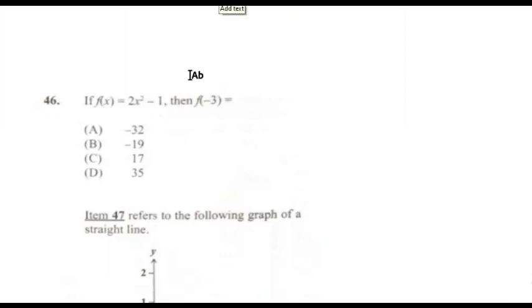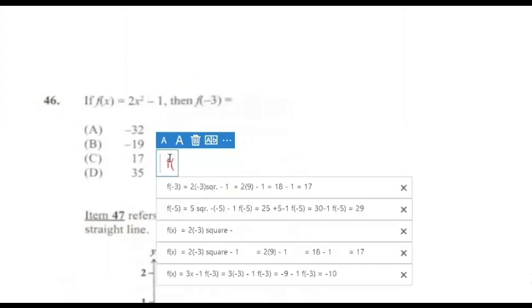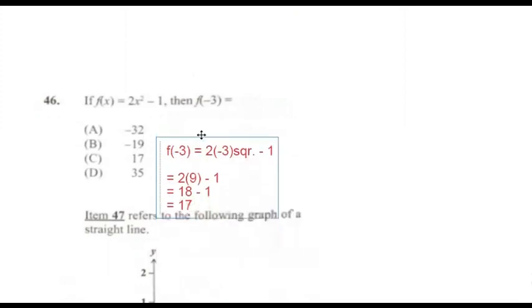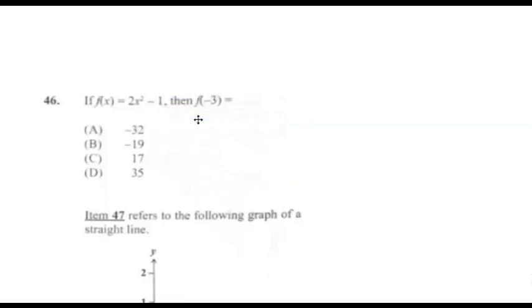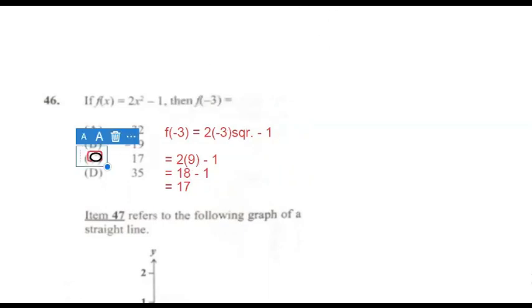Question 46: If f(x) = 2x² − 1, then f(−3) is equal to what? Remember, anywhere we see x we replace it with −3. So f(−3) = 2 × (−3)² − 1. Squaring a negative number gives a positive, so it is 2 × 9 − 1 = 18 − 1 = 17. Answer for 46 is C.